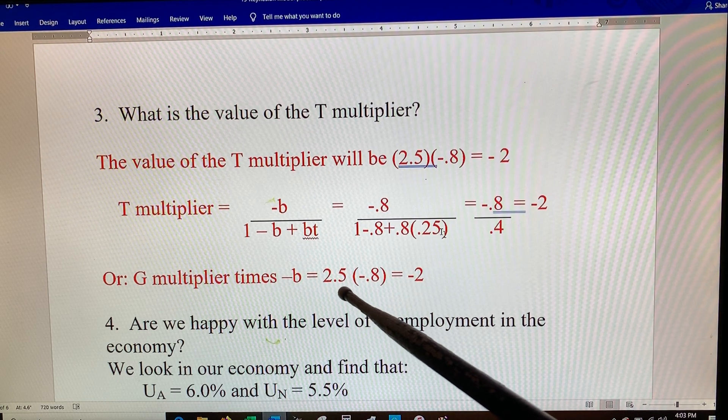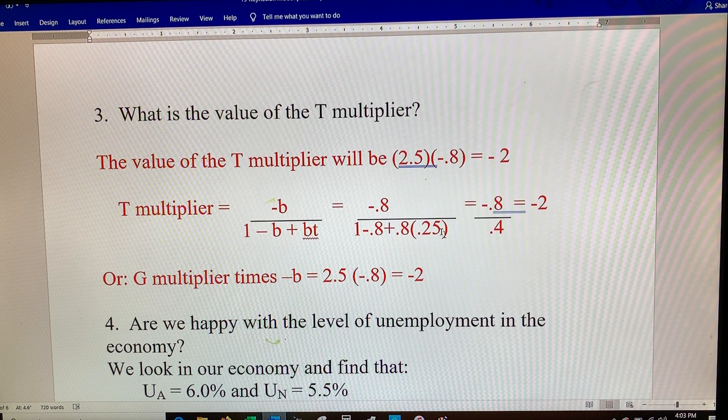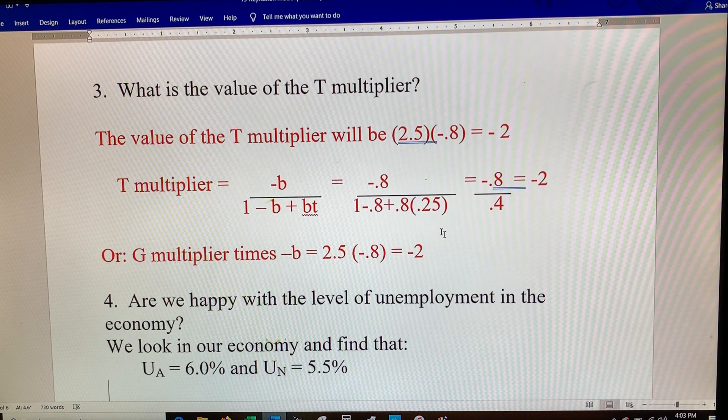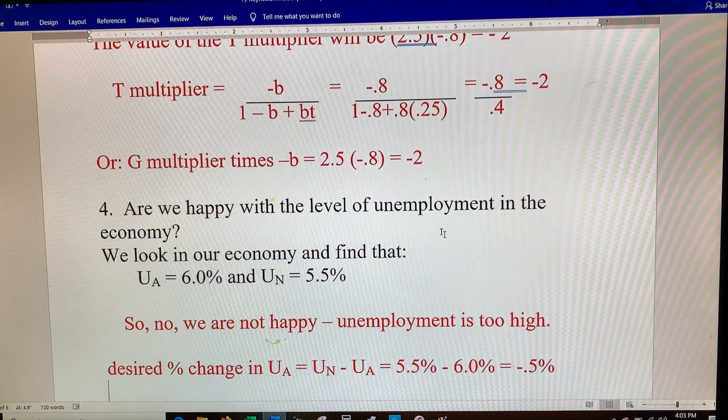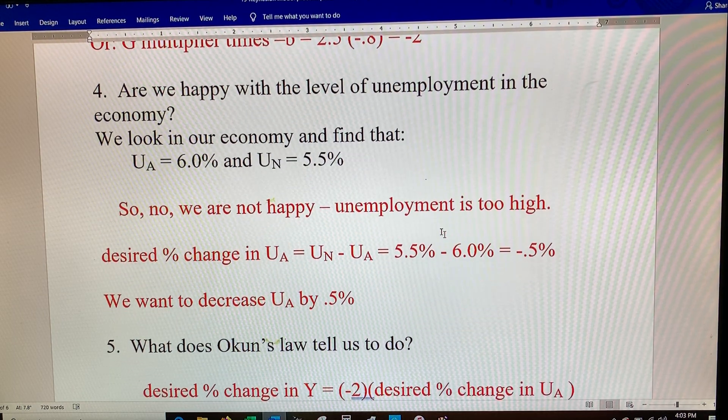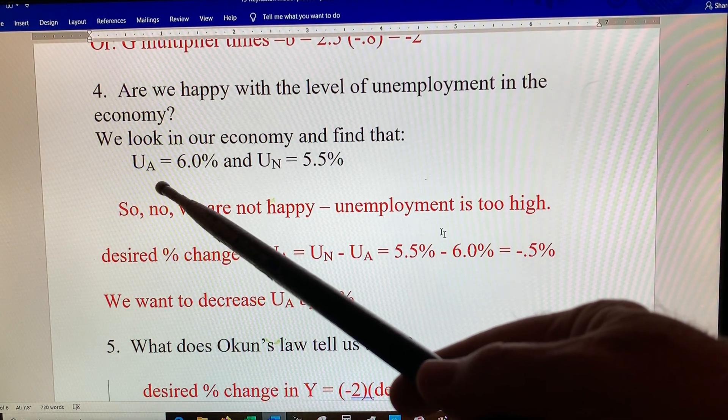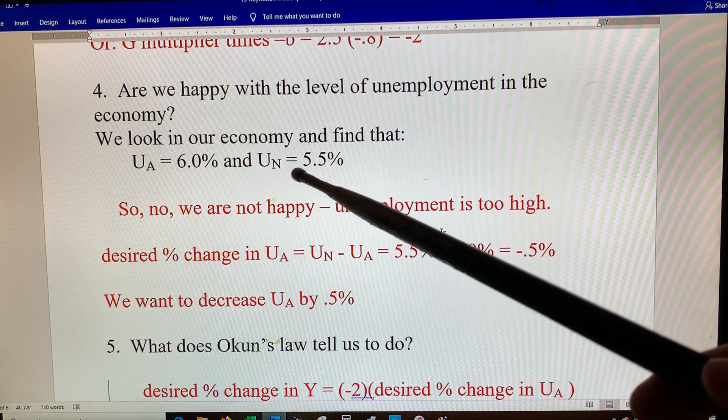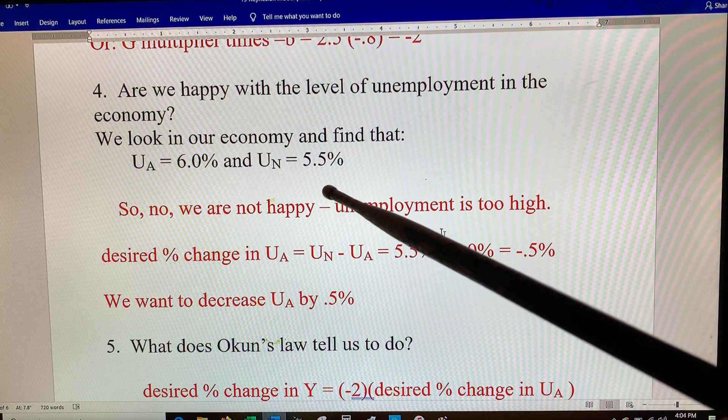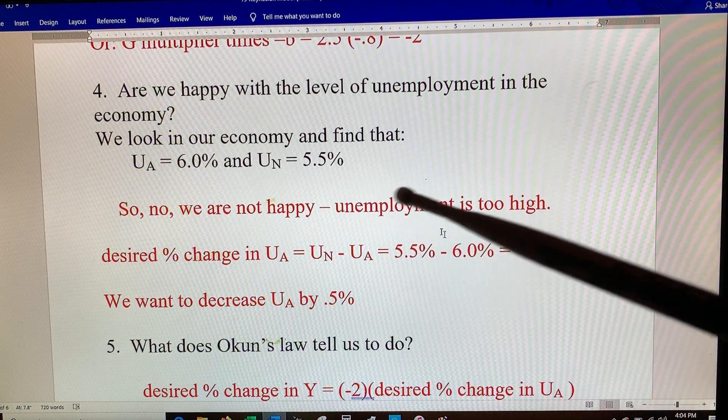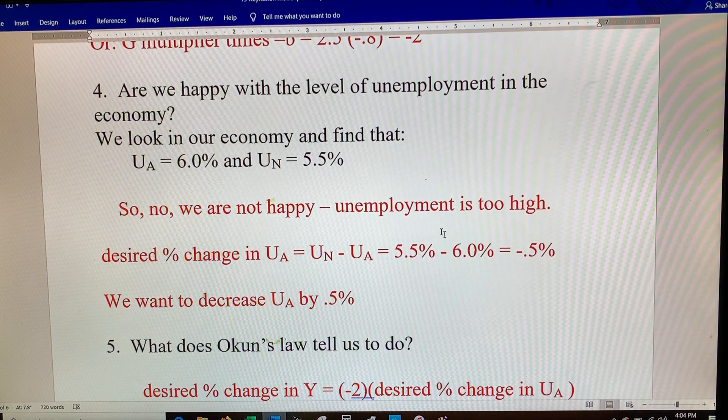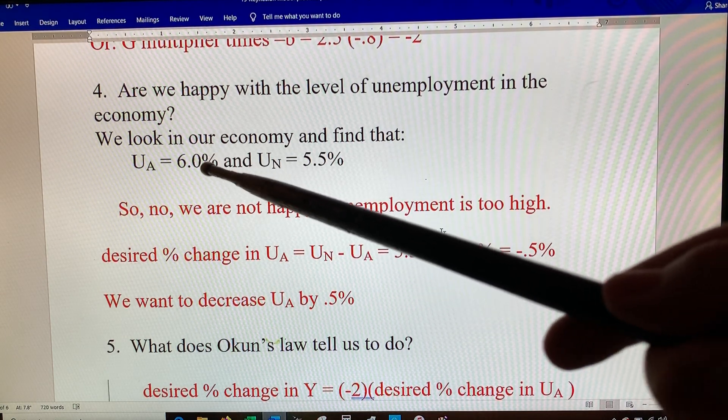Let's go out and measure the unemployment. Are we happy with the level of unemployment? Actual unemployment is 6%, the natural rate or the healthy, best rate is 5.5%. So we're not quite happy, it's a little bit too high. We'd like to drop this half a percentage, so the desired percent change would be minus half a percent.